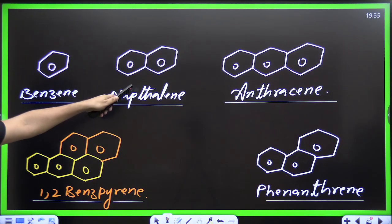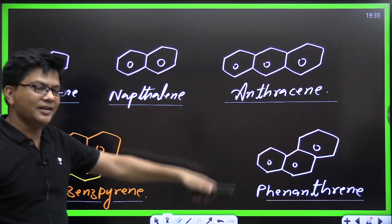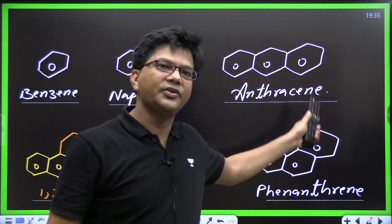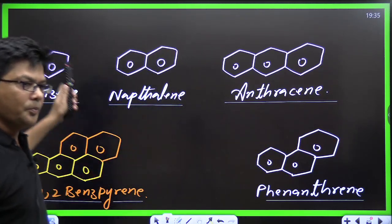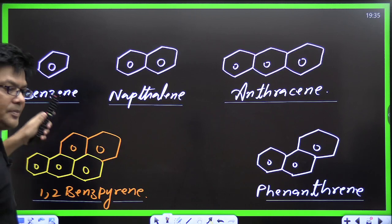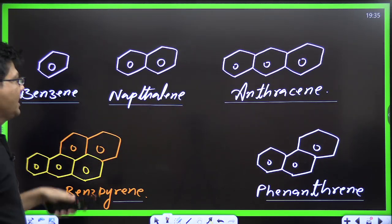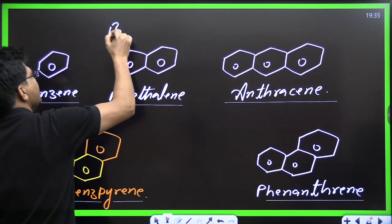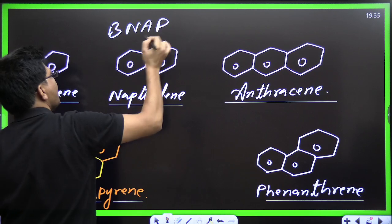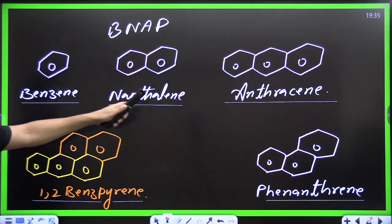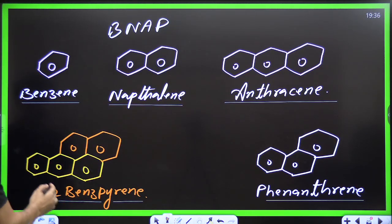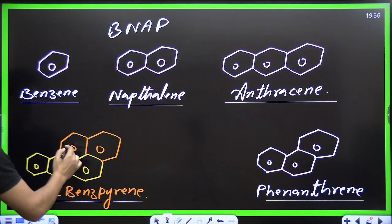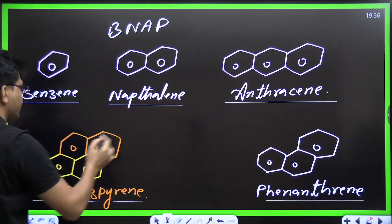Benzyl. Now, benzene, naphthalene, anthracene, phenanthrene — remember the mnemonic BNAP: B for benzene, N for naphthalene, A for anthracene, P for phenanthrene. In phenanthrene, something extra is added to anthracene — that's the distinction. 1,2-benzopyrene is also an important polycyclic compound.